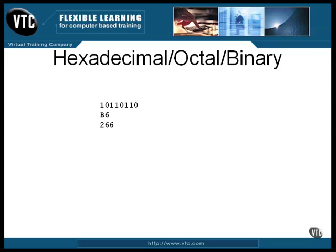Another way to write this same value is with octal digits. It takes three digits to represent an eight-bit value. The first digit represents the first two bits, and the other digits represent three bits each — that makes an eight-bit byte. You need to understand octal in case you ever come across it, but it's mostly of historical interest these days. About the only thing it's still used for is the file permission system on Unix. This same number written in base ten is 182.